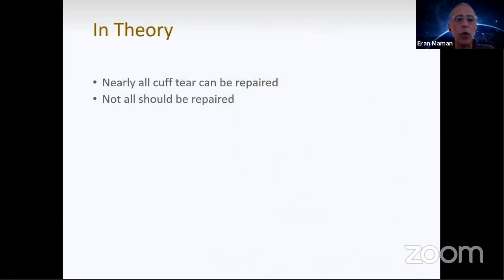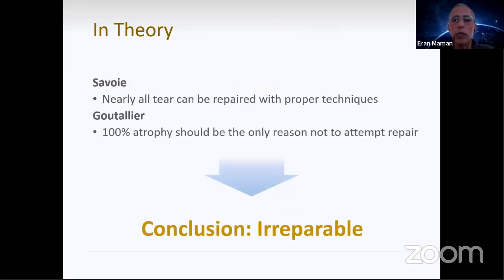So in theory, nearly all cuff tears can be repaired, but not all should be repaired. Barry Savoie can repair everything. Goutallier said that only 100% atrophy should be the reason not to attempt repair. But we know today it's not the real thing, maybe Goutallier 3 or 4 depending on the study.